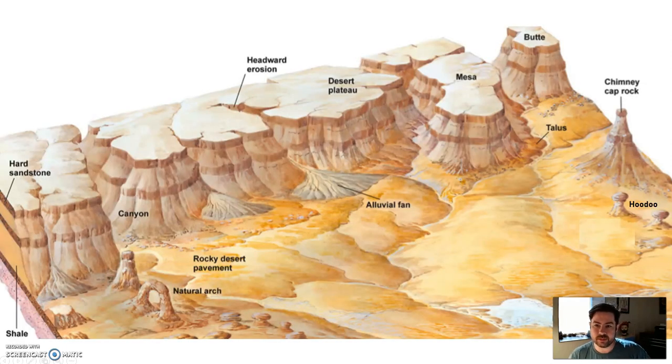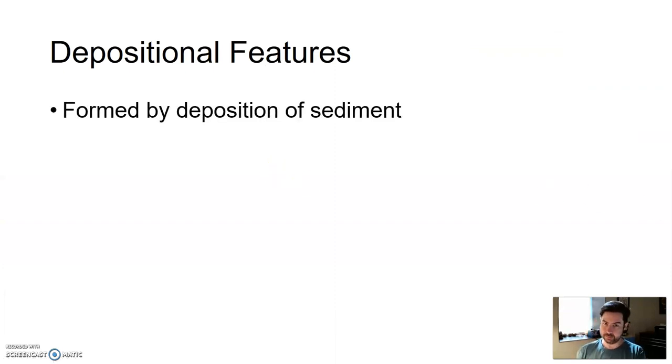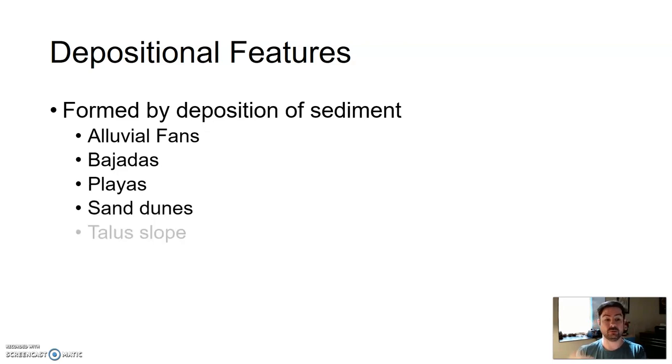Looking at that same picture, we can talk about material being deposited such as alluvial fans, playa lakes, talus slopes, a number of different places where sediment will pile up. This is formed by the deposition of sediment, not where it's being taken away, but where it's being deposited. Alluvial fans, bajadas, playas, sand dunes, and talus slopes, just to name a few.